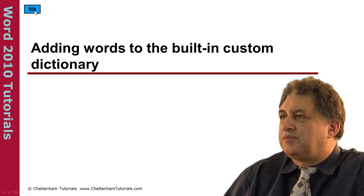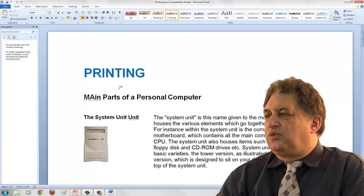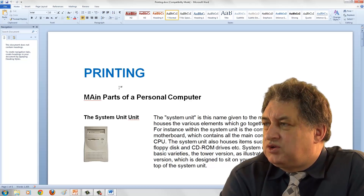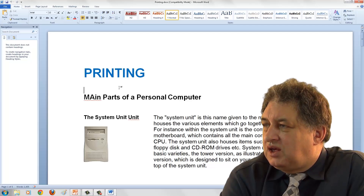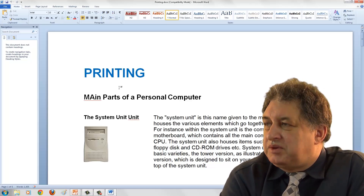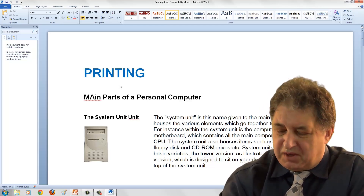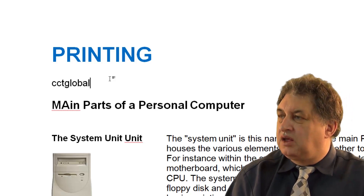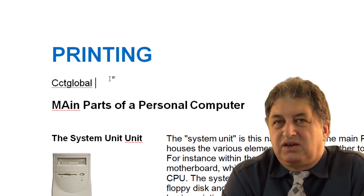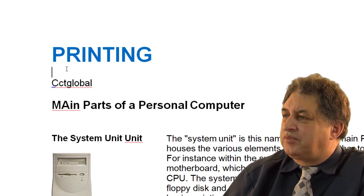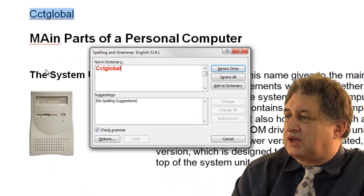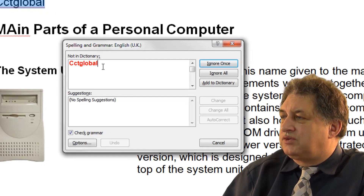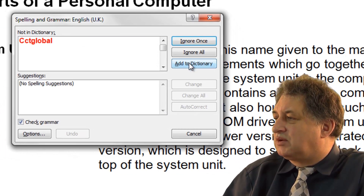Adding words to the built-in custom dictionary. Sometimes Microsoft Word will query words it doesn't understand — it doesn't necessarily mean the words are wrong, it just means it doesn't know about them. Word has a long list of words it knows about, but there will be specialist words or company-specific words it doesn't know. For instance, the word CCTGlobal is underlined in red. If I press F7, it says that's not in the dictionary. So I can click 'Add to Dictionary' by clicking on this button here.